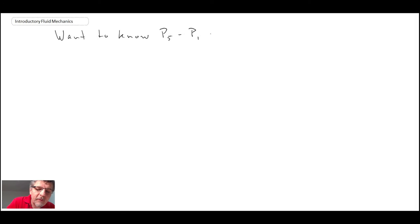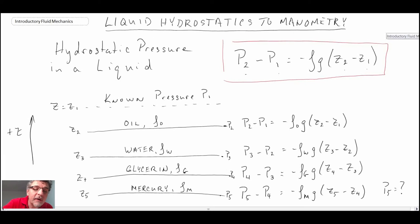If you want to know P5 and you would reference it to P1, which was the known pressure at the top, the way that we would do it is we would add all of these together. We would take all of these here and add them all together. And then similarly with the right hand side, we would add all of these together.